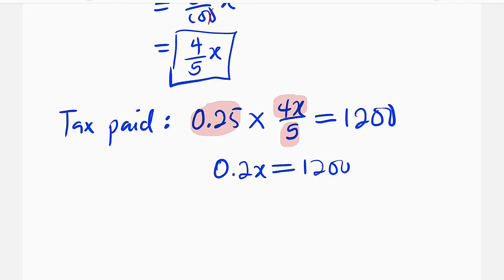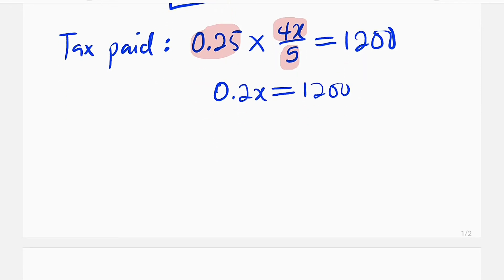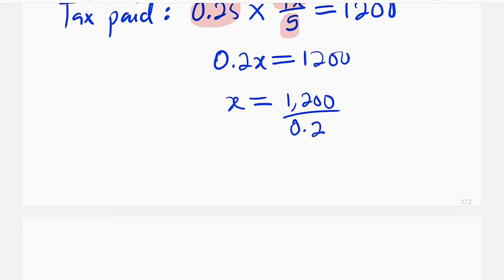To find the value of X, we can now divide both sides by 0.2. Finally, X is equal to 1,200 divided by 0.2. Use your calculator to divide and X must be equal to 6,000 naira.